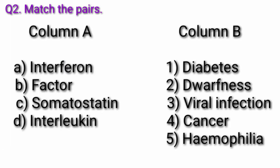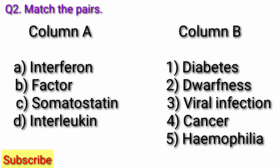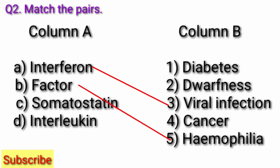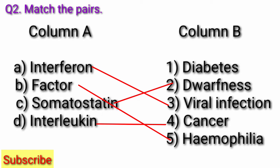Question 2: Match the pairs. Column A: A. Interferon, B. Factor, C. Somatostatin, D. Interleukin. Column B: 1. Diabetes, 2. Dwarfness, 3. Viral Infection, 4. Cancer, 5. Hemophilia. Answer: Interferon — Viral Infection; Factor — Hemophilia; Somatostatin — Dwarfness; Interleukin — Cancer.